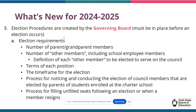Continuing with council election requirements, it is important to note that election procedures should be created by the school's governing board and must be in place before an election occurs. Your council elections must incorporate the following requirements: first, you must state the number of parent or grandparent members to be elected during the election; you must also state the number of other member seats available for the election, along with a definition for other members serving on your council. You must also state the length of term for each position, as well as provide notice about the timeframe for the election in your election announcement.